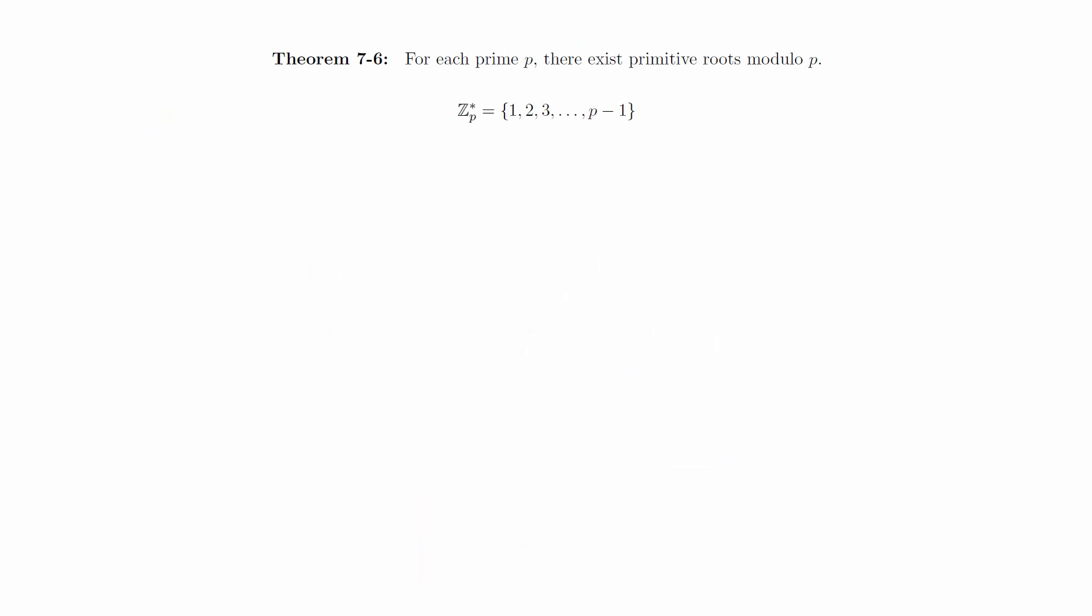Consider the reduced residue system Z_p star, which consists of the numbers 1, 2, up to p minus 1 modulo p, and let N(h) denote the number of those integers that have order h.